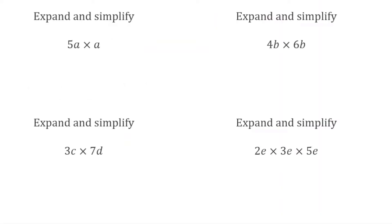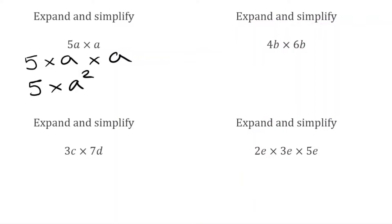Feel free to pause the video at this point if you want to have a go at these. For the first question, we've got 5a multiplied by a. 5a means 5 multiplied by a, so we have 5 multiplied by a multiplied by a again. Looking at those a's first — a multiplied by a is a squared — so we've got 5 multiplied by a squared. Hiding the multiplication sign, the final answer is 5a squared.